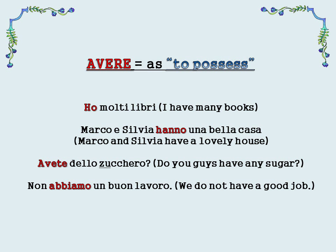As you might suppose, avere is used in many contexts in which an English speaker would use the verb 'to have,' as in the sense of 'to possess.' Ho molti libri — I have many books. Marco e Silvia hanno una bella casa — Marco and Silvia have a lovely house. Avete dello zucchero? — Do you guys have any sugar? Non abbiamo un buon lavoro — We do not have a good job.